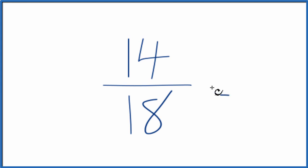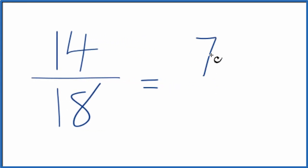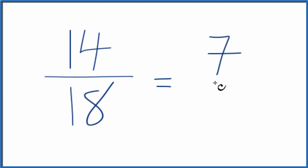14 divided by 2 is 7, 18 divided by 2 is 9, and we can't reduce 7 ninths any further. There's no common factor other than 1.